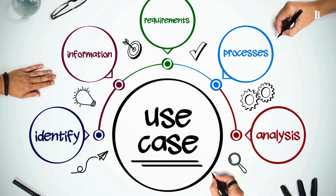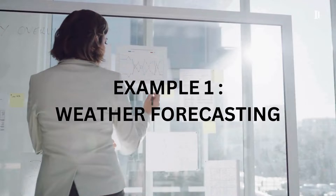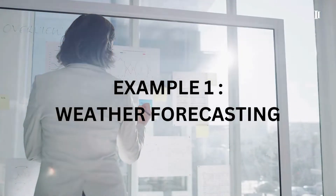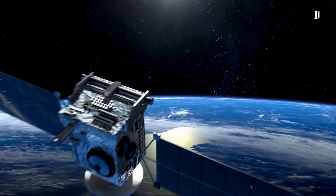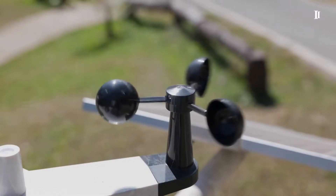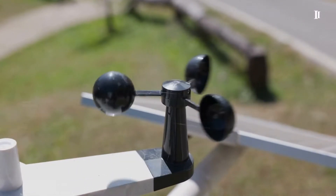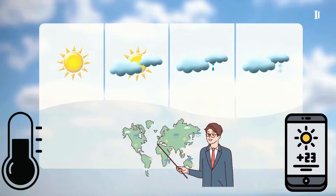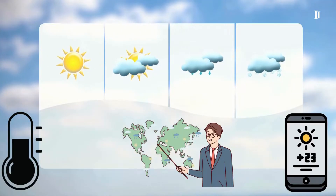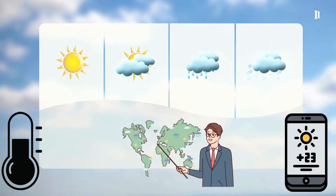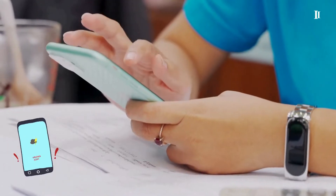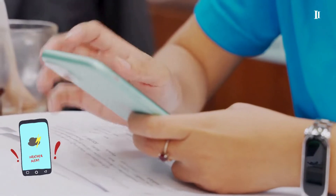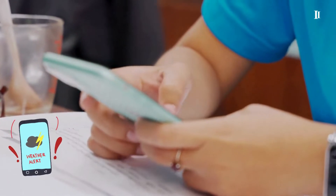Here are some daily use cases where information is derived from data. Example 1: Weather forecasting. Data from diverse meteorological sources, such as satellites, weather stations, and sensors, is used to generate weather forecasts. These forecasts include predictions for temperature, precipitation, wind speed, and atmospheric conditions, providing valuable information. People rely on this information to plan their daily activities according to the anticipated weather conditions.